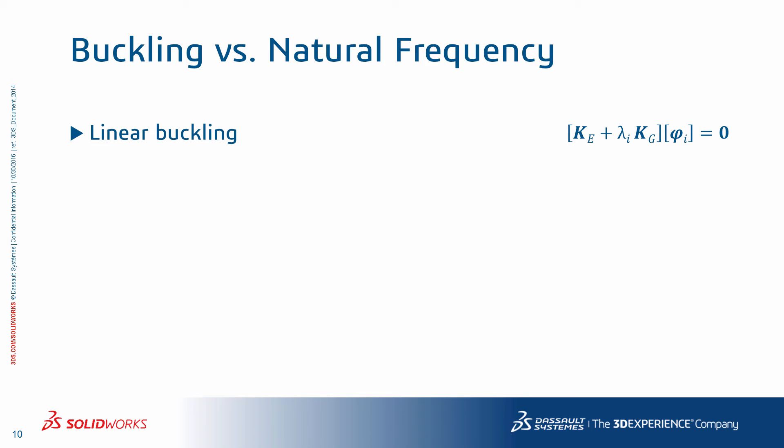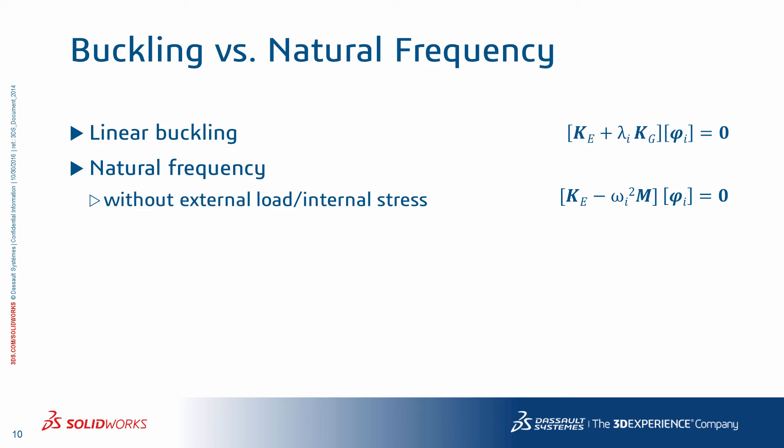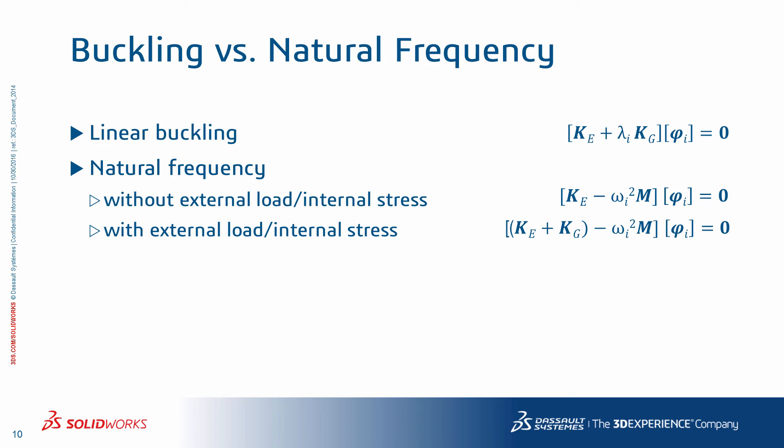We presented the formula for linear buckling earlier with K_e being the elastic stiffness matrix and K_g the geometric stiffness matrix, lambda the buckling load factor or eigenvalue, and phi the displacement or eigenvector. The equation for natural frequency without external load or internal stress looks similar, with omega being the resonance frequency and M the mass matrix. We know that external forces and resulting internal stresses change the value of resonant frequencies — for example, the higher the tension in a guitar string, the higher the pitch. In the frequency formula, this is taken into account by adding K_g to K_e.